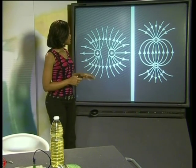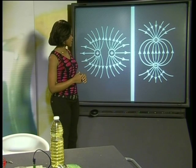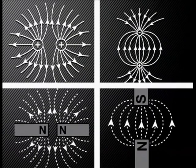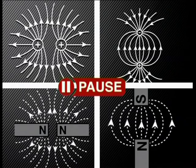Let's look at the diagrams from the last two experiments again. The patterns shown by these two electric fields look very familiar. Compare the patterns of the two electric fields and these two magnetic fields — can you see the similarities between these two types of fields?